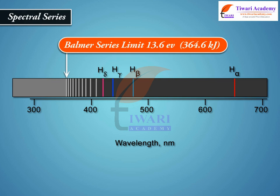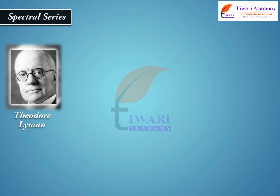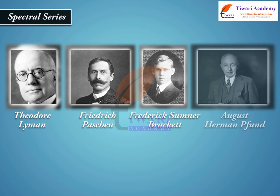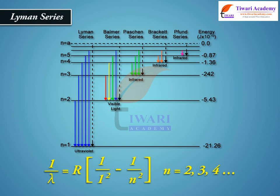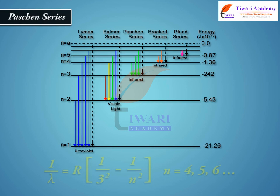Later, other series of spectra for hydrogen were discovered, known after their discoverers as Lyman, Paschen, Brackett, and Pfund series. The Lyman series formula is: 1/λ = R(1/1² − 1/n²), n = 2, 3, 4, and so on. The Brackett series formula is: 1/λ = R(1/3² − 1/n²), n = 4, 5, 6, and so on.